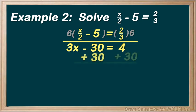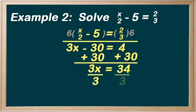We can add 30 to both sides, leaving 3x, and on the right, 34. Dividing both sides by 3, and we have x equals 34 over 3. Isolated. And of course, we can always confirm this.